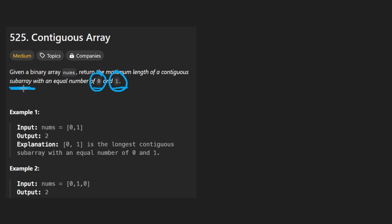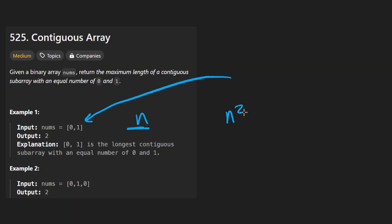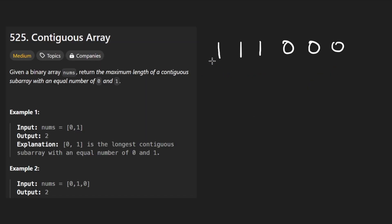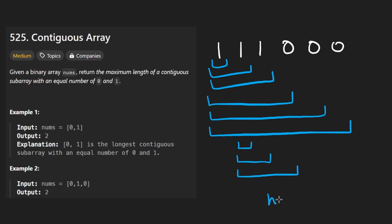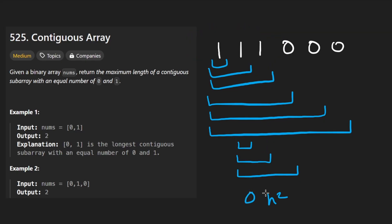Thinking about subarrays, the immediate thing I personally think of is: how many subarrays does an array of size n have? It has n² subarrays. We have n subarrays starting with the first element, then roughly n subarrays starting with the second element, and so on. So it's going to be n² if we want to check every single subarray. This is kind of our benchmark.